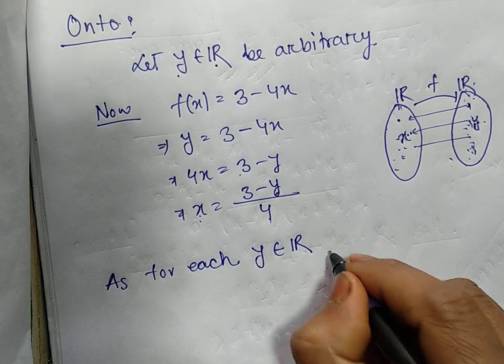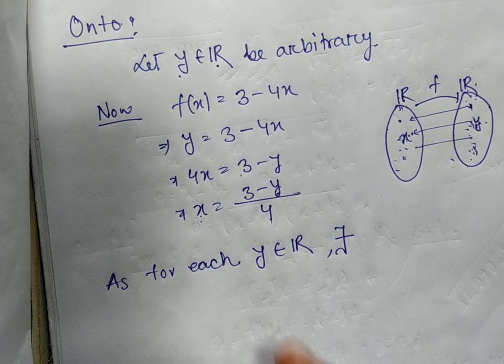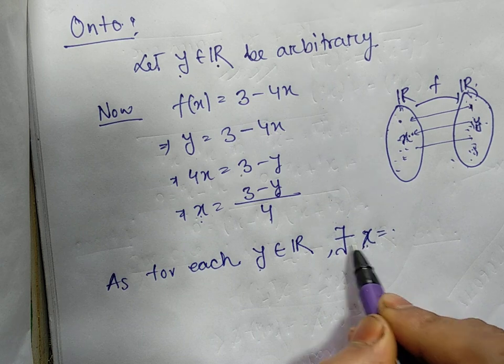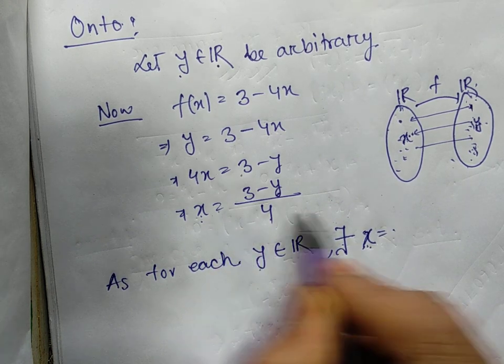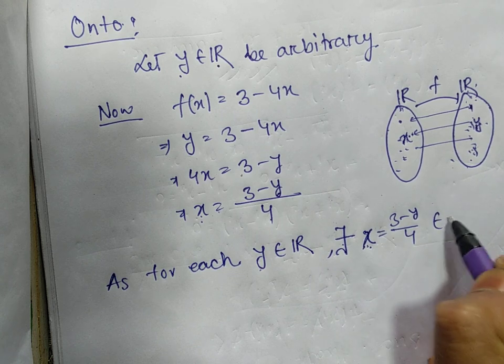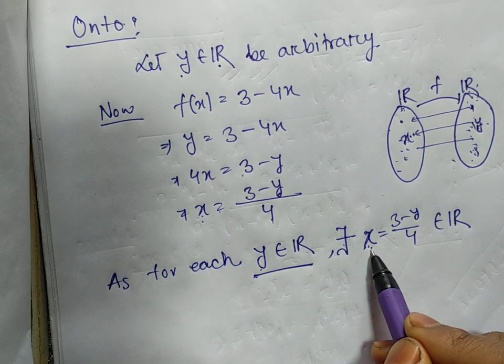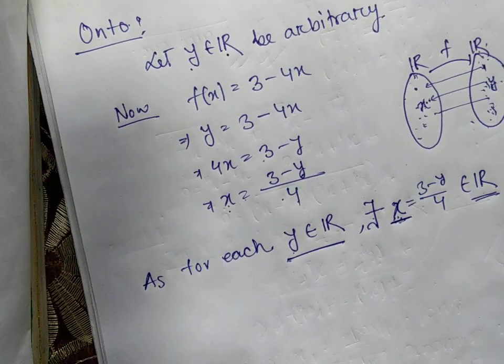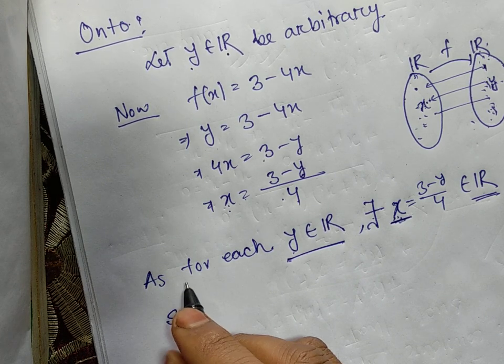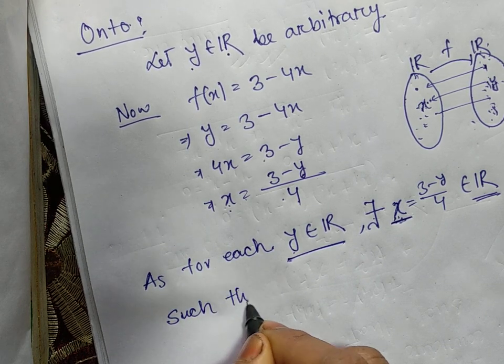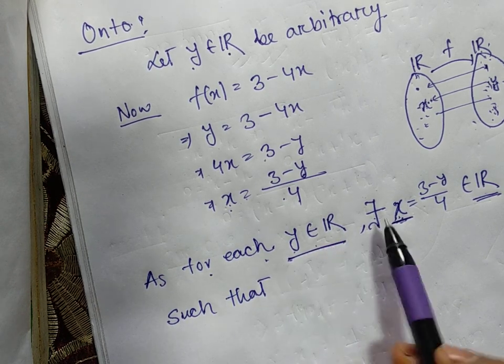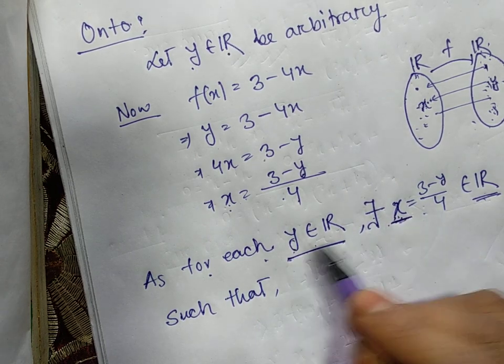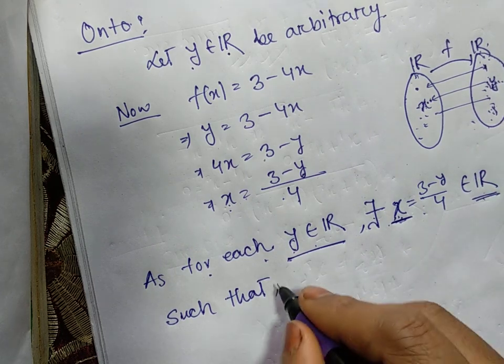As for each y belongs to R, there exists x = (3 - y)/4 such that...